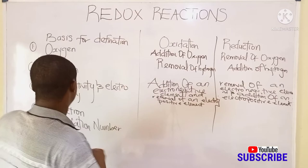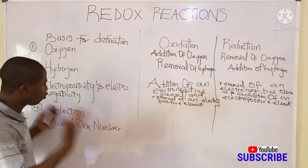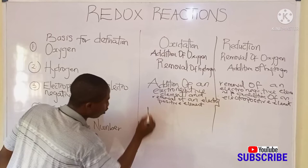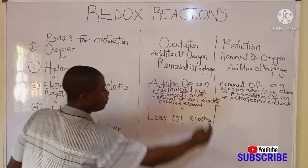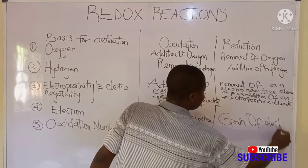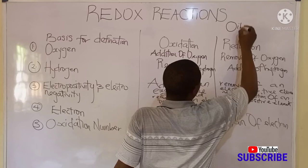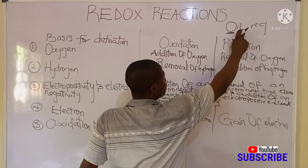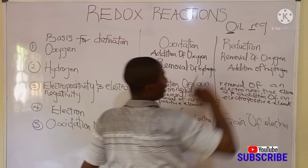Now, using electrons to classify oxidation and reduction — what is oxidation according to electrons? It is simply loss of electrons, and reduction here becomes gain of electrons. This can be explained using an acronym, which is O-E-R-E: Oxidation is loss of electrons, and Reduction is gain of electrons.